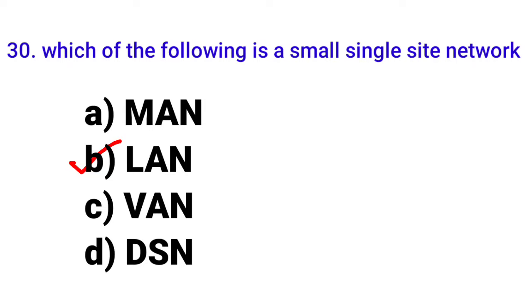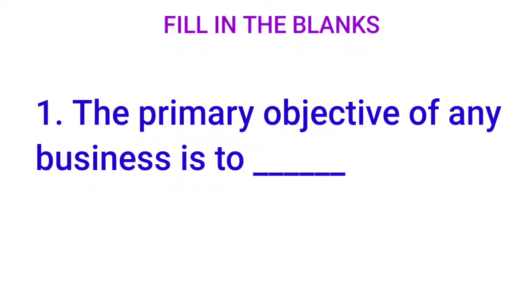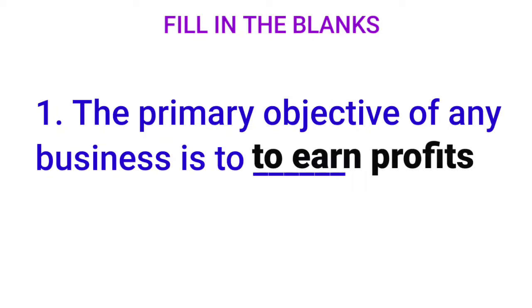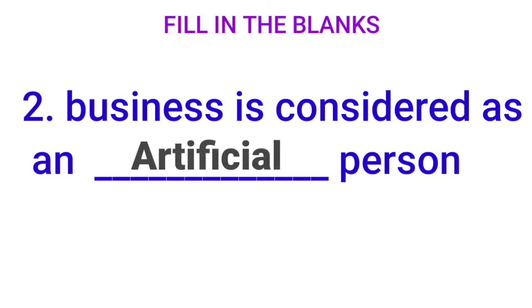Now, fill in the blanks. First: 'The primary objective of any business is to dash' — the answer is to earn profits. Second: 'Business is considered as a dash person' — business is an artificial person. Third: 'Dash is also known as partnership agreement' — the answer is partnership deed.